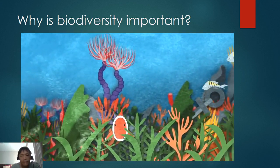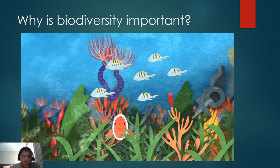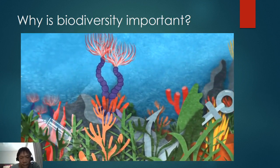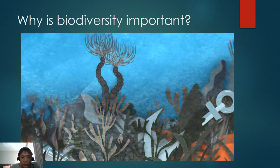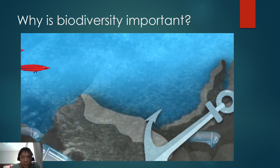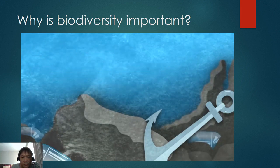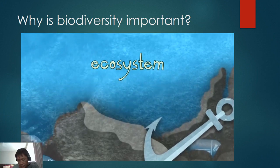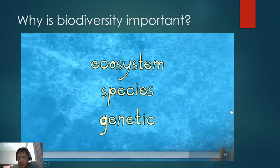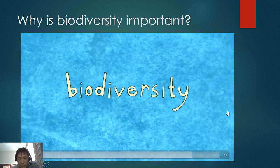That makes coral a keystone organism — one that many others depend on for their survival. So what happens when destructive fishing practices, pollution, and ocean acidification weaken coral, or even kill it altogether? Exactly what you might think. The loss of this keystone species leaves its dependents at a loss too, threatening the entire fabric of the reef. Ecosystem, species, and genetic diversity together form the complex tangled weave of biodiversity that is vital for the survival of organisms on Earth.